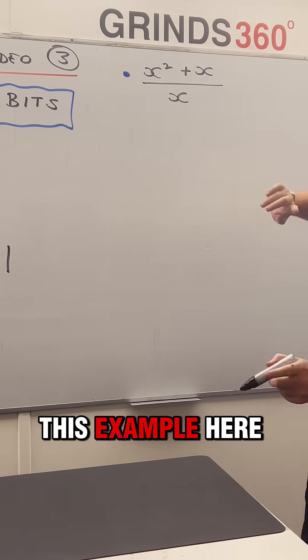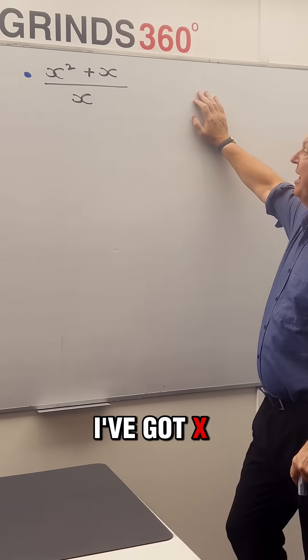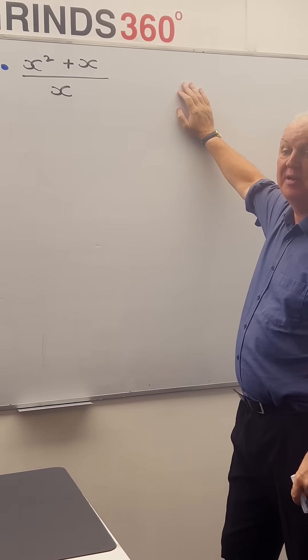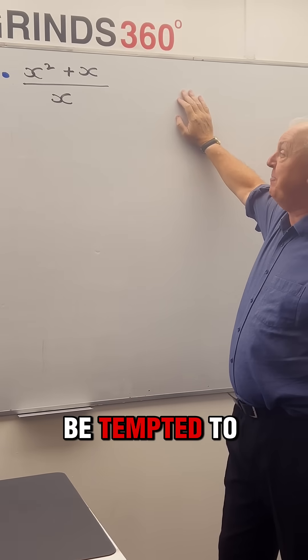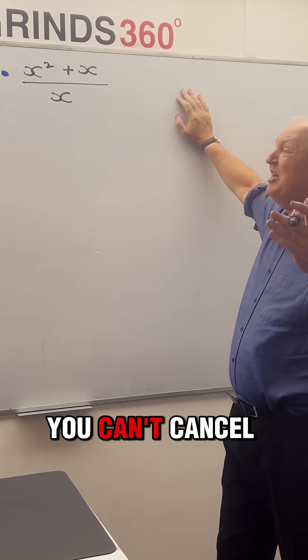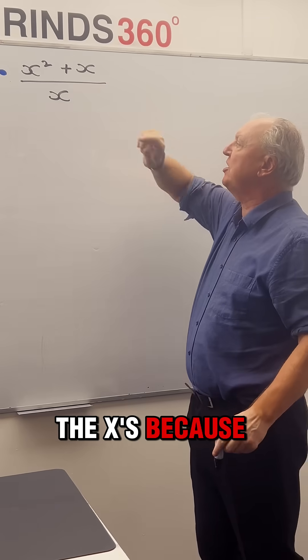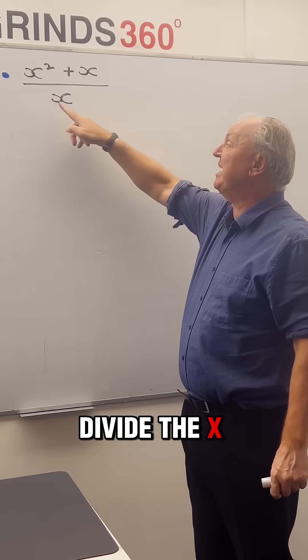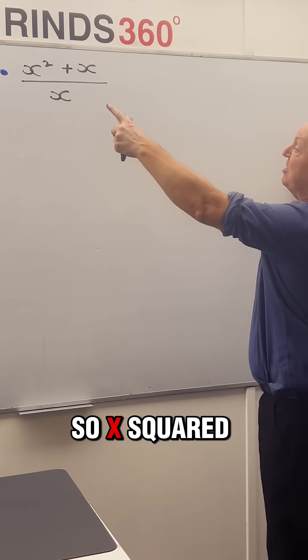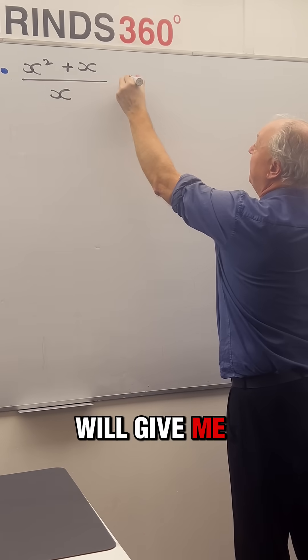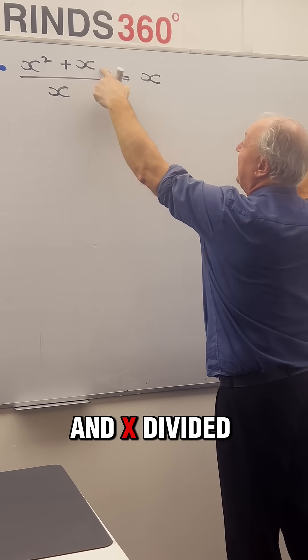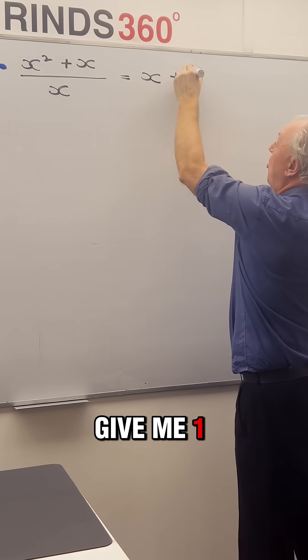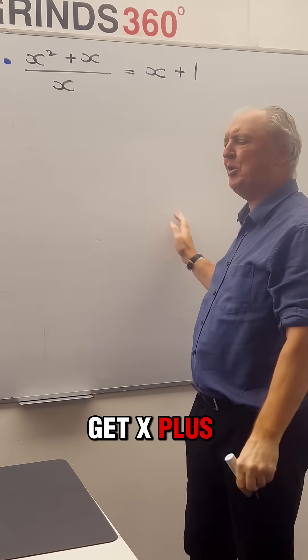Let's look at this example here. I've got x squared plus x divided by x. Some students will be tempted to cancel the x's. You can't cancel the x's because of that plus on top. You could if you wish divide the x into each term above. So x squared divided by x will give me x and x divided by x will give me 1. So I could get x plus 1.